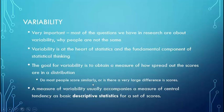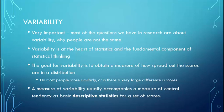Think about it this way: if I give a final in this class and everybody gets an 80, we have no variability. But if some people get a 40, some a 50, 60, 70, 80, up to 100 — now we have a lot of variability in scores. Central Tendency describes the center point of the distribution, and variability talks about how the scores are scattered around that center point. Together, those are the primary values that describe a distribution of scores.